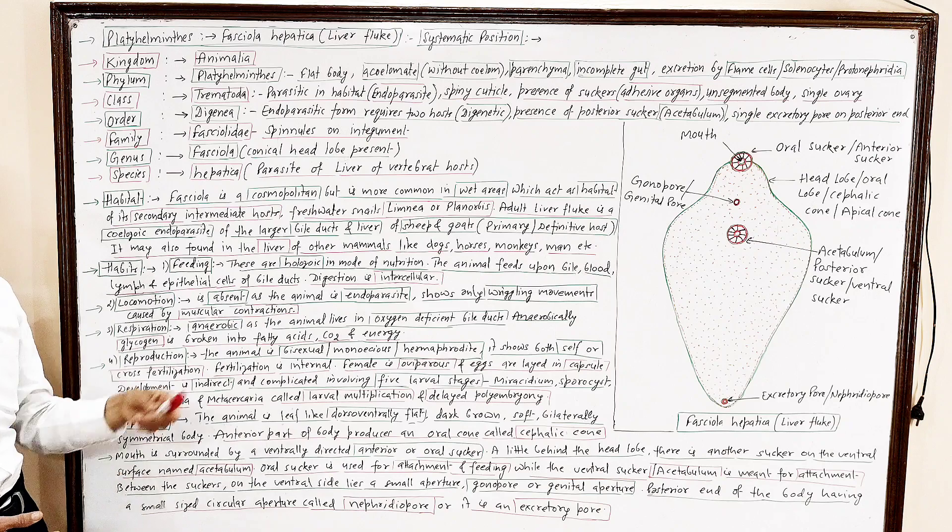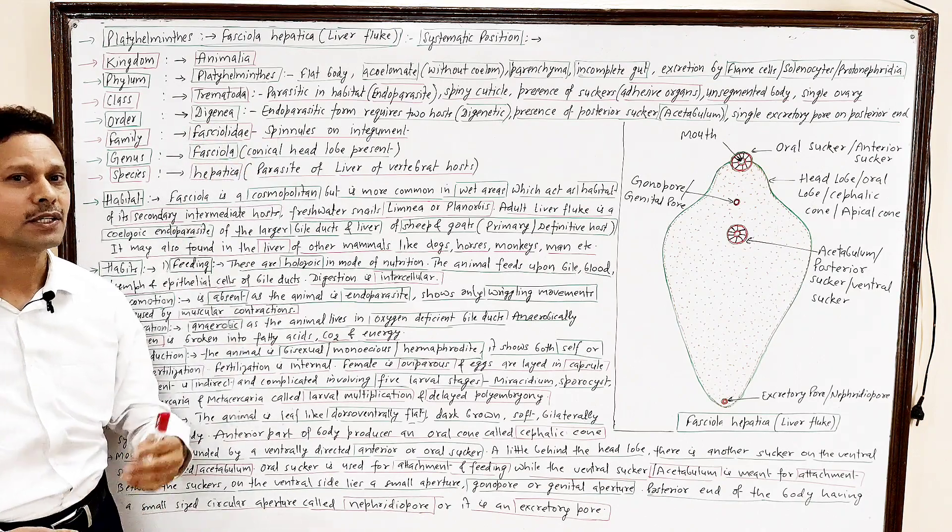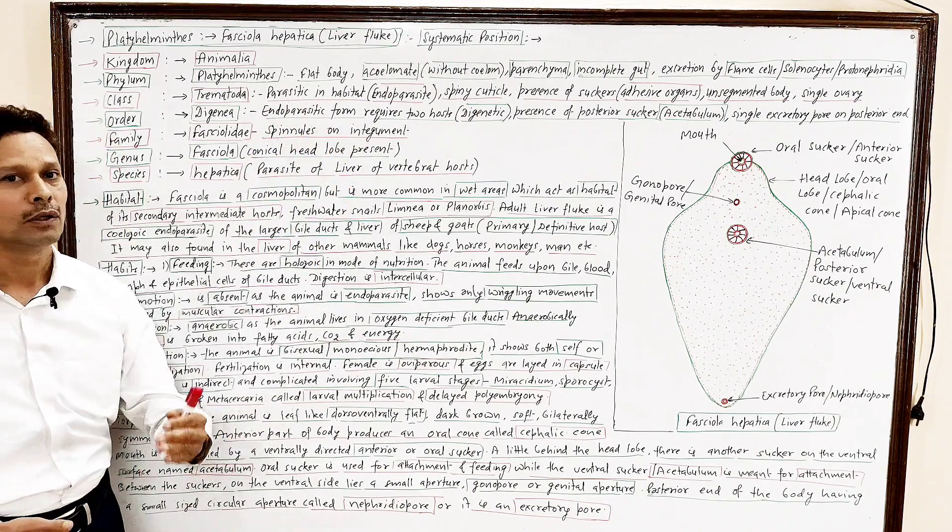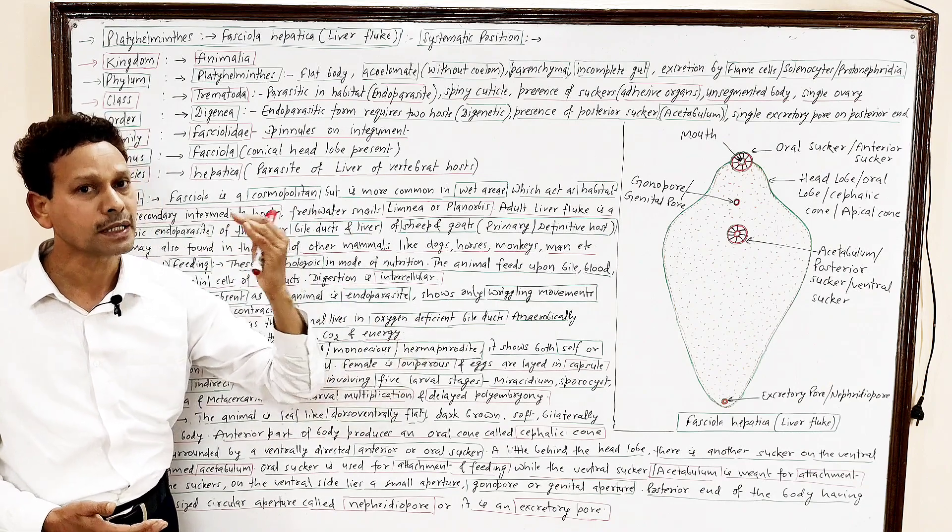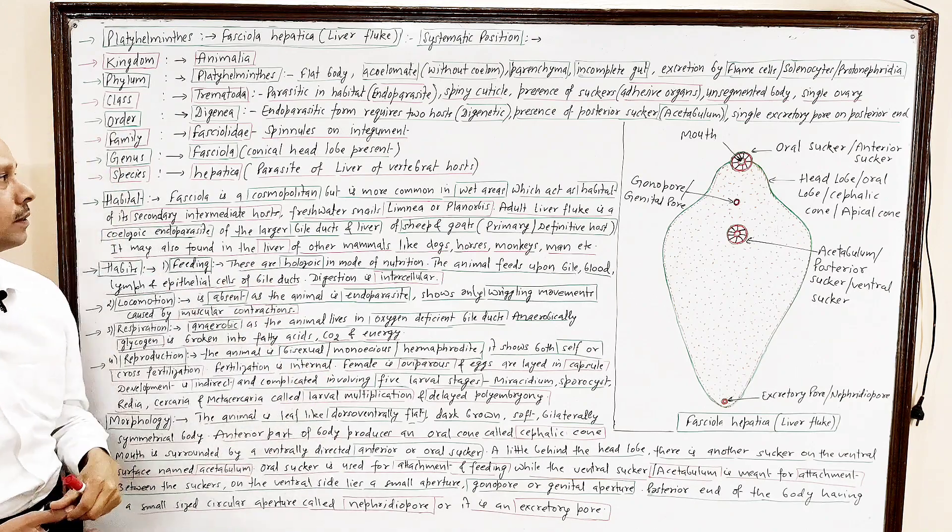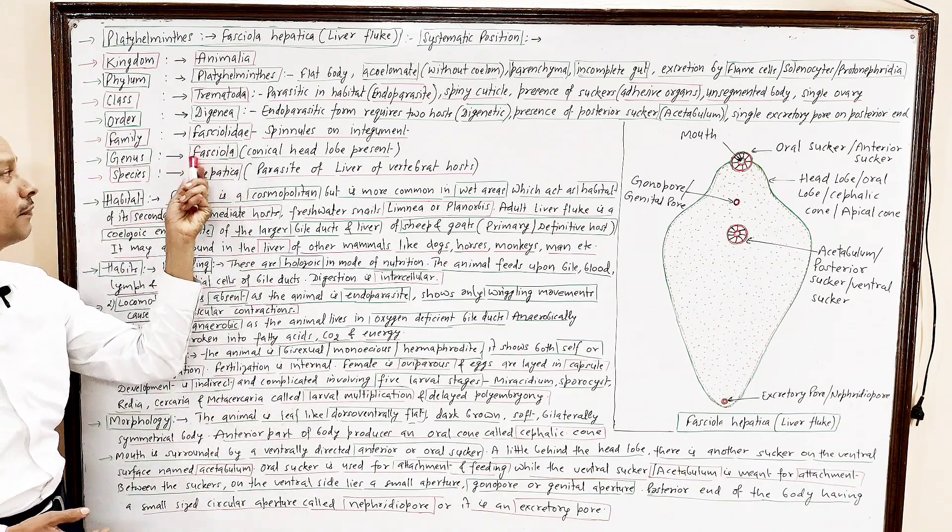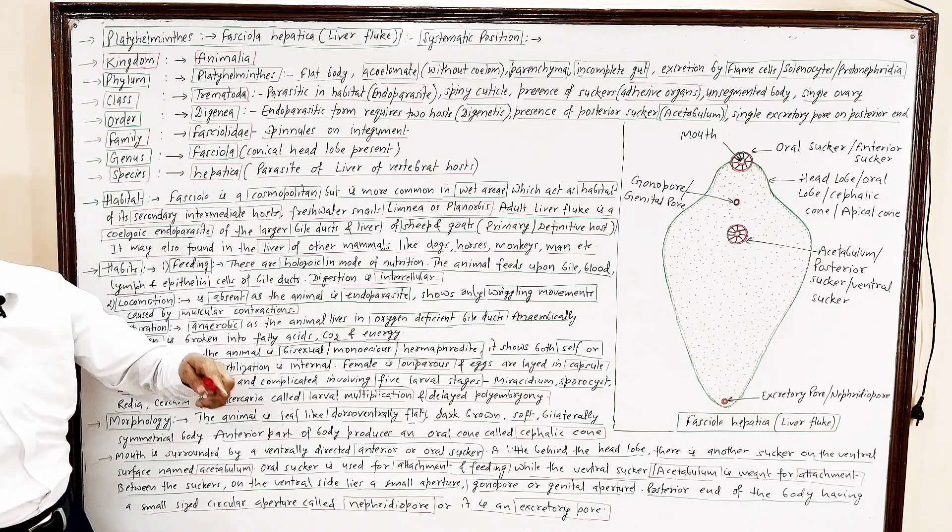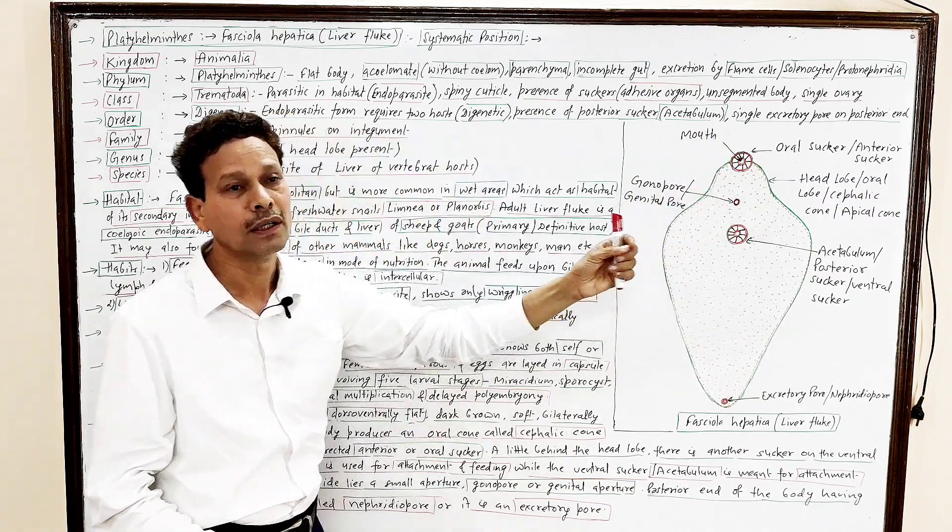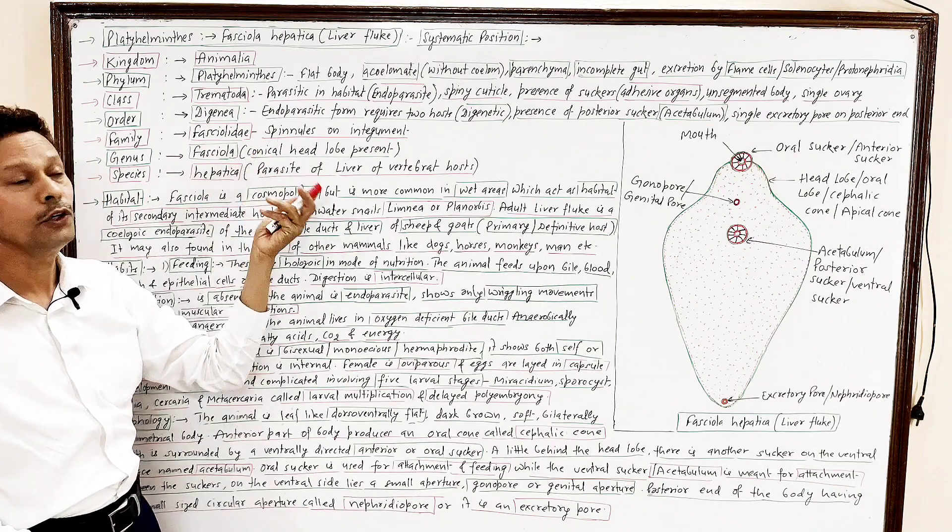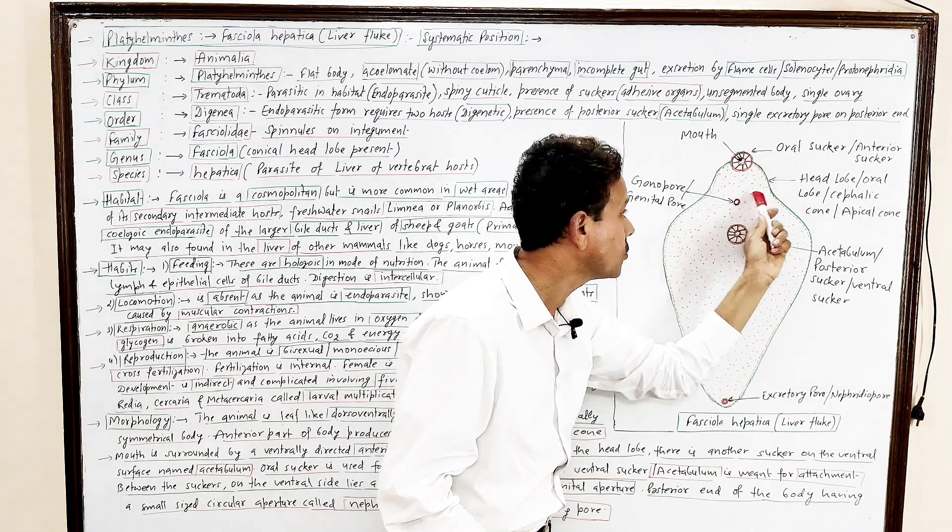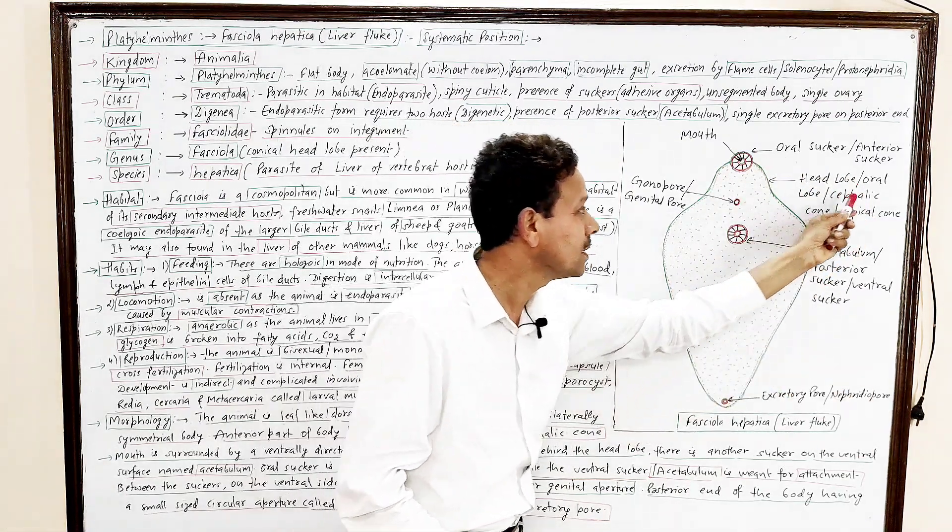Family, and family is Fasciolidae. Dear students, Fasciolidae, it means spinules on integument, on their outer surface, on their body wall. Thus integument possesses the projections, spinules. Genus, it is Fasciola. The conical head lobe, from this diagram very clear, this anterior part having this conical projection. It is Fasciola due to presence of this apical head lobe, oral lobe, or it is this conical projection, this head lobe, it is cephalic cone. Dear students, it is present on anterior part, this one is apical cone.